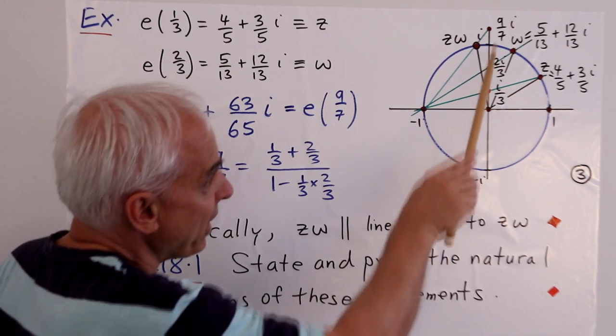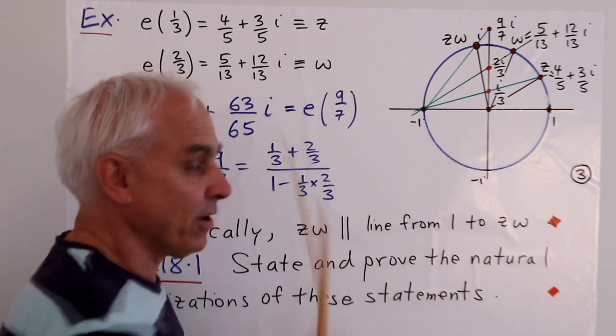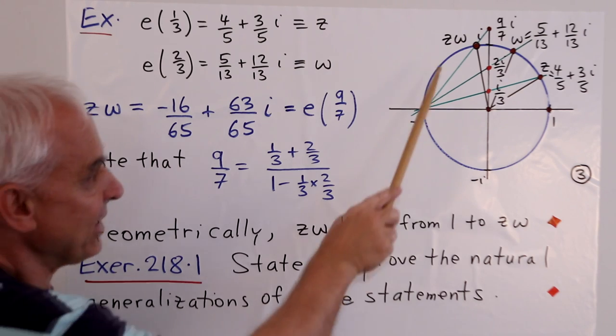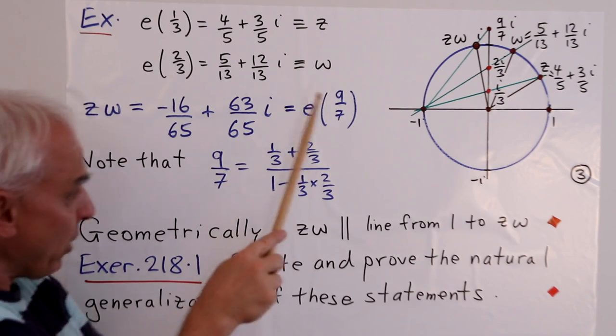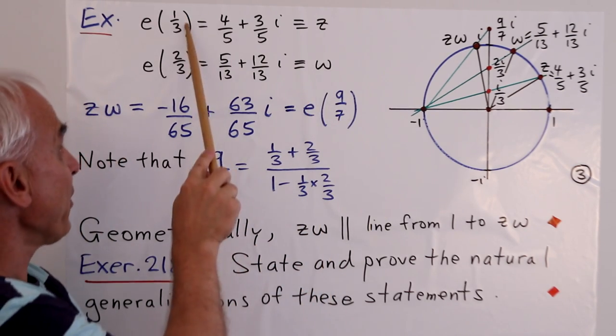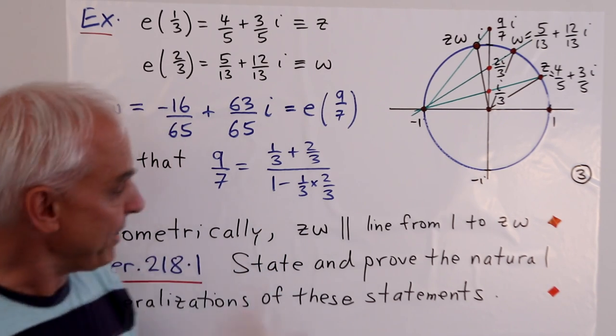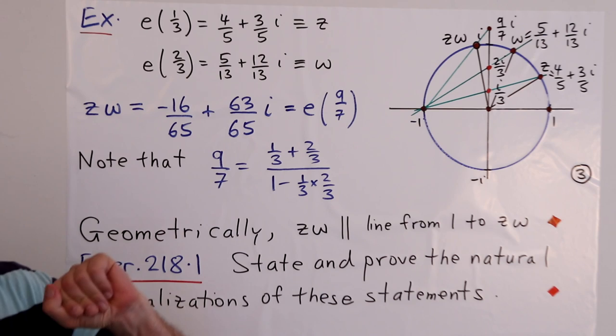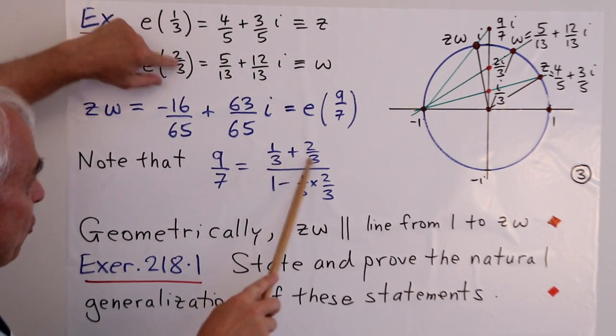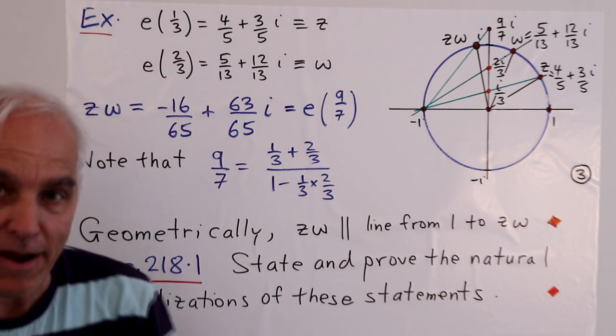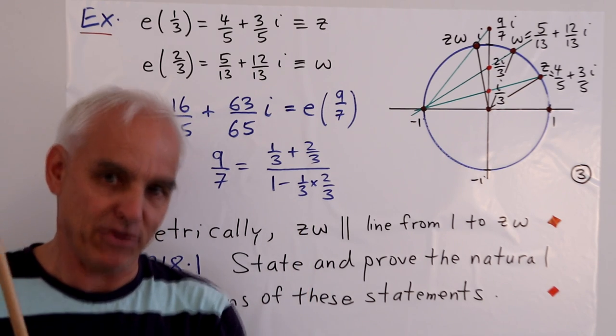That means if we take the point 9/7i up here and draw a line from here to that point, it will meet the circle at exactly the point zw. A natural question is, how do we get 9/7 from 1/3 and 2/3 if we wanted to do it directly? The answer is in this beautiful formula right here.